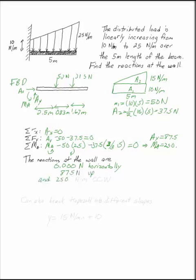Notice, you can break these up into different shapes. You can integrate if you want to. You could say Y is equal to your slope of 15 N per meter acting over X plus 10. You could integrate that to find out your total magnitude and find the centroid of it to figure out where it works.